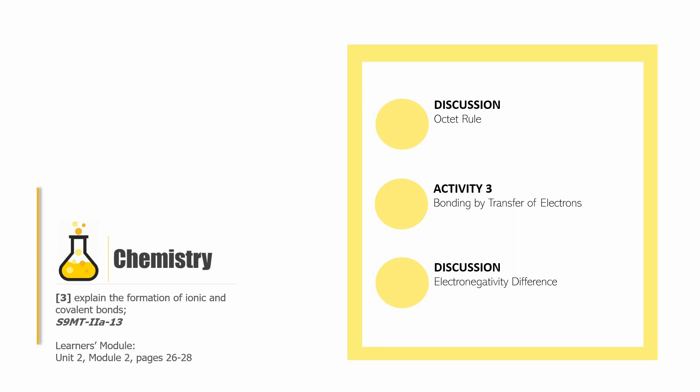This session is going to be divided into three parts: a discussion on the Octet Rule, Activity Number 3 — Bonding by Transfer of Electrons — and a discussion on electronegativity difference. So, let's begin.